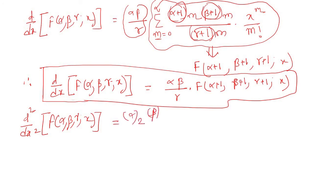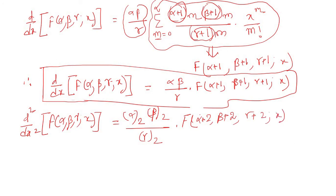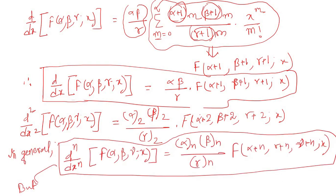In the same spirit we can derive the second derivative: d²/dx² F(α, β; γ; x) equals α(α+1) β(β+1) over γ(γ+1) times F(α+2, β+2; γ+2; x). In general, the nth derivative formula can also be proved with the help of mathematical induction.